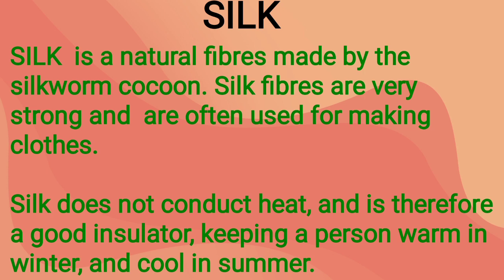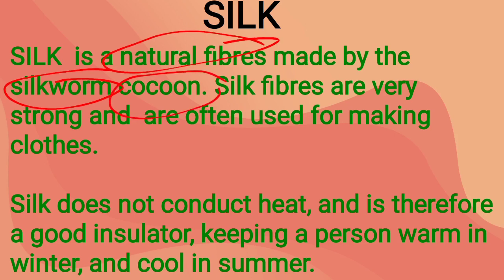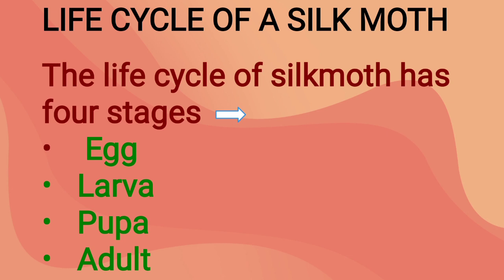The second fiber we study is silk. Silk is a natural fiber obtained from the silkworm's cocoon. Silk fibers are very strong and are often used for making clothes. Silk does not conduct heat and is therefore a good insulator, keeping a person warm in winter and cool in summer. The life cycle of a silk moth has four stages: egg, larva, pupa, and adult.